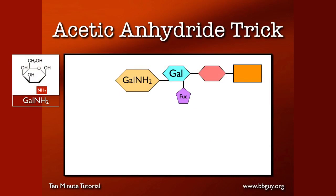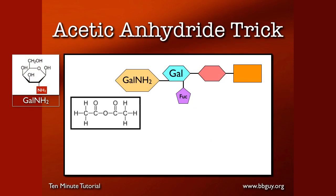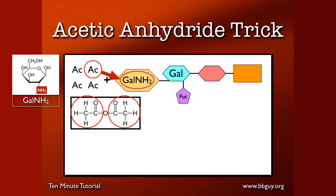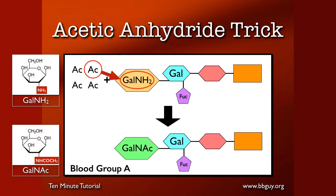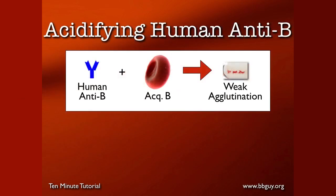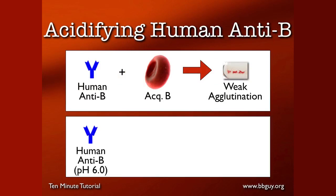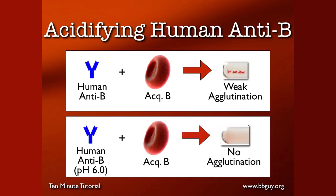Another trick is the acetic anhydride trick. Acquired B has this galactosamine. You add acetic anhydride — which is simply a couple of acetyl groups bound with an oxygen in the middle — basically supplying a whole bunch of acetyl groups so that one could interact with that galactosamine and convert the whole chain back into an A antigen by changing galactosamine into N-acetylgalactosamine. Finally, you can acidify human forms of anti-B — take the pH down to 6.0 — and that agglutination goes away with acquired B cells, though it would still react extremely well with regular group B cells.